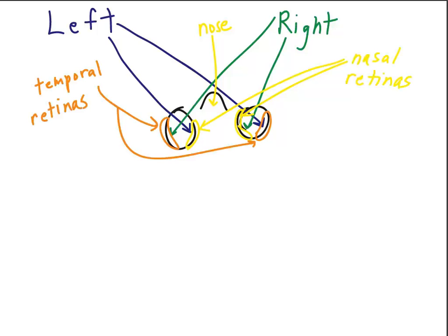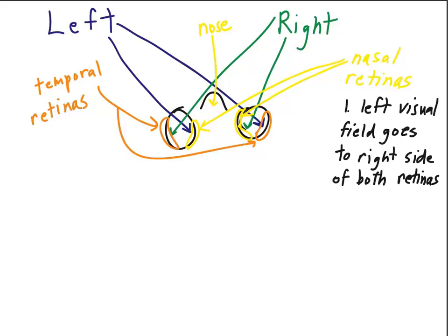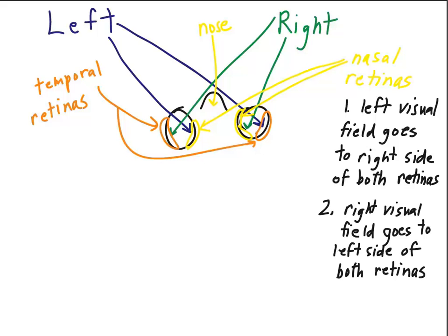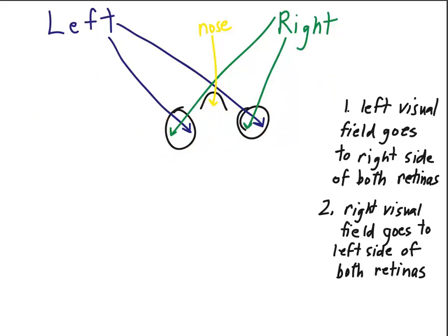So we've provided labels here to show the different areas of the retina. As we look at this drawing, there are a couple of things that we can observe. First, as we already discussed, the left visual field goes to the right side of both retinas, and the right visual field goes to the left side of both retinas.